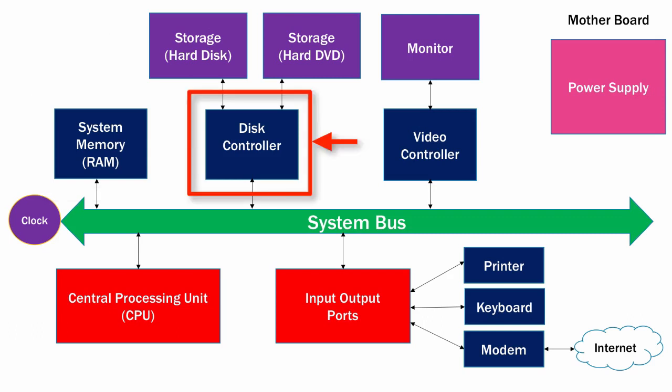The next item we'll talk about is the disk controller. The disk controller synchronizes operations with storage devices such as hard disks or DVD drives. On the motherboard there will be a socket where a cable can connect to the motherboard to a particular hard drive or DVD drive. Larger desktop computers may have multiple hard drives or DVD drives, and the capacity for this is driven by the disk controller and the number of sockets on the motherboard.